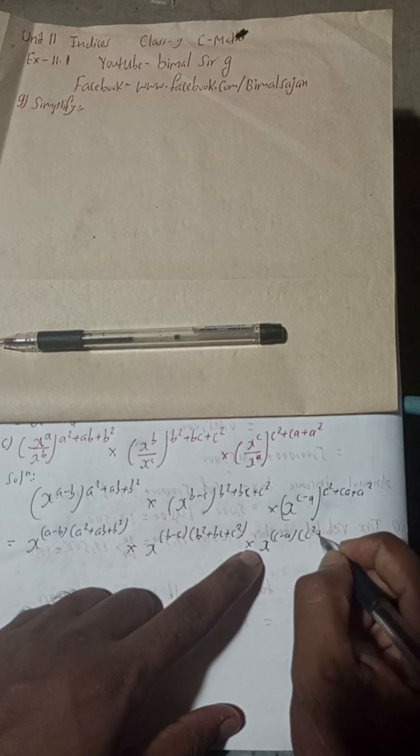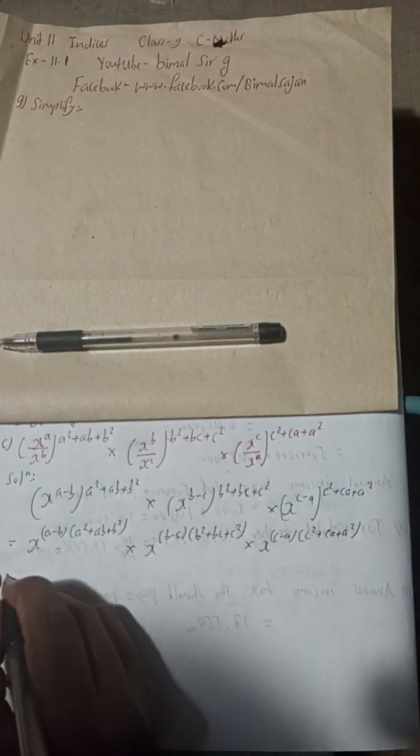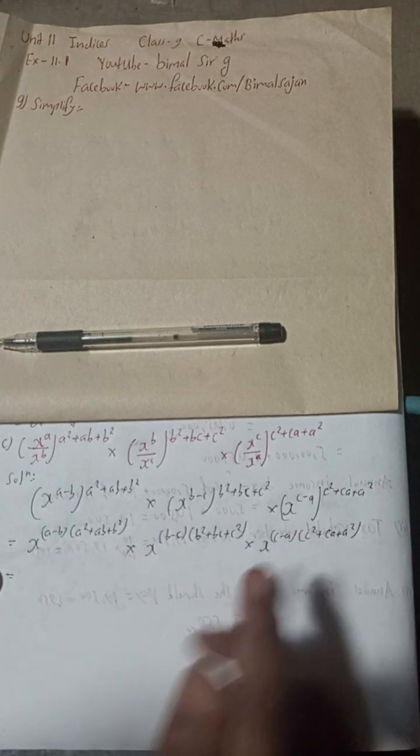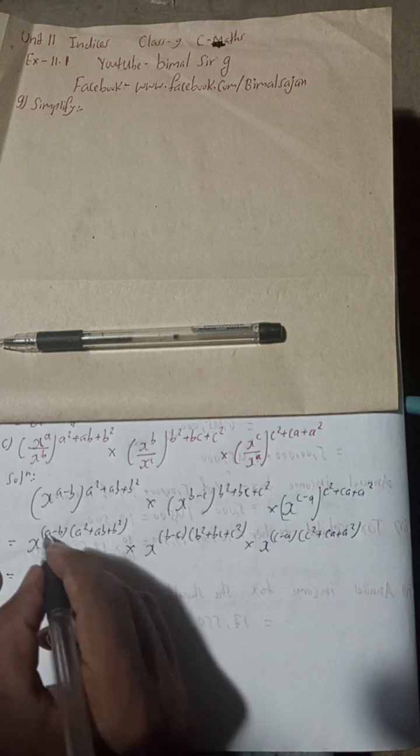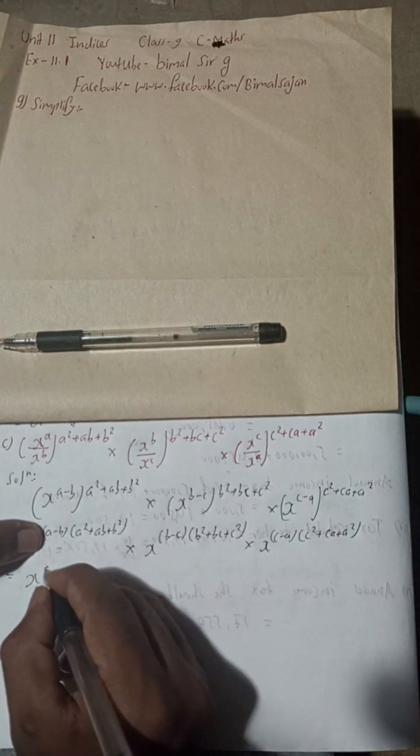And whole power this is c² + ca + a². Now this is x in the multiplied form, so all the powers will be added. But before that, we can apply our formula. This formula is for a³ - b³.